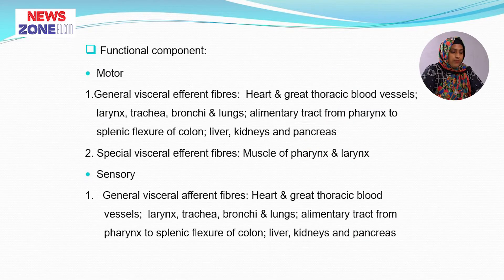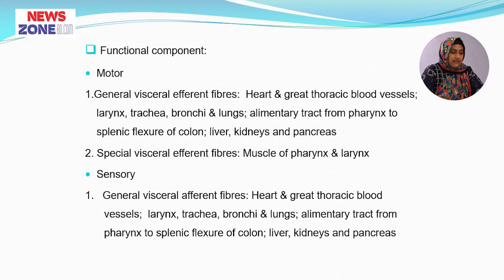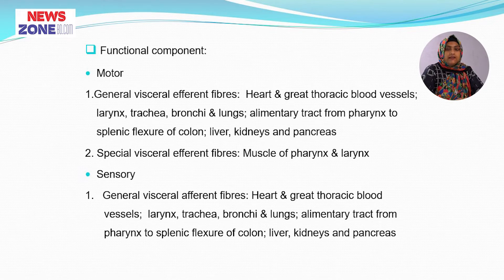The functional components: the motor component is the general visceral efferent fibre, supplying the heart and great thoracic blood vessels, larynx, trachea, bronchi and the lungs, and the alimentary tract from the pharynx to the splenic flexure of the colon, liver, kidney and the pancreas. The special visceral efferent fibre supplies the muscles of the pharynx and the larynx.